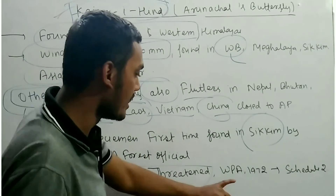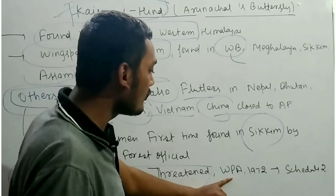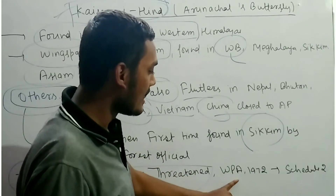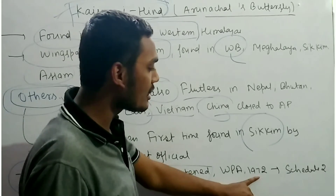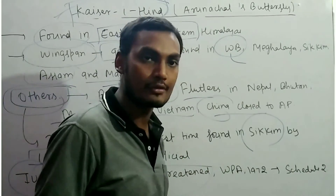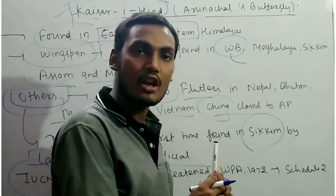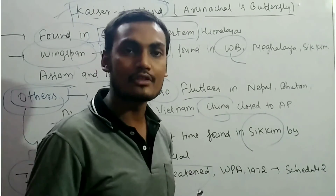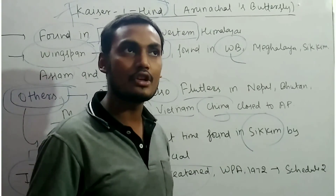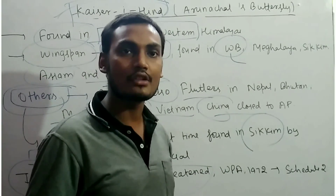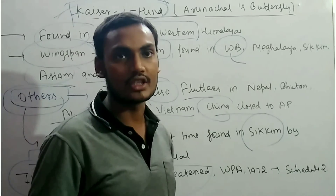Under the Wildlife Protection Act 1972, the Kesar Ayind is listed in Schedule 2. That covers all the key information about the Kesar Ayind butterfly.